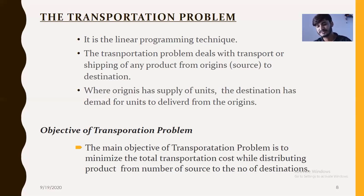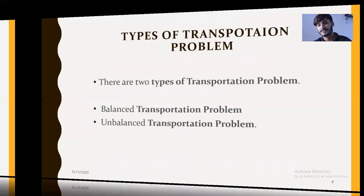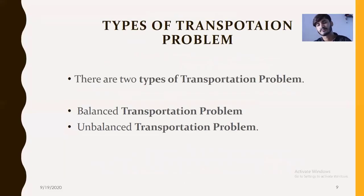The main objective of the transportation problem is to minimize total transportation cost while distributing a product from a number of sources to a number of destinations. There are two main types of transportation problems: the balanced transportation problem and the unbalanced transportation problem.